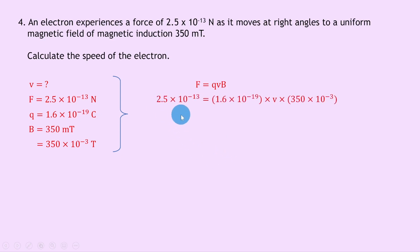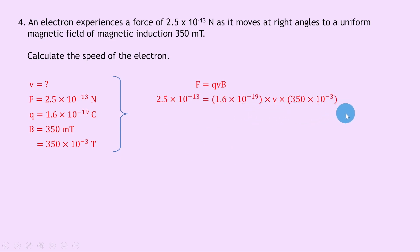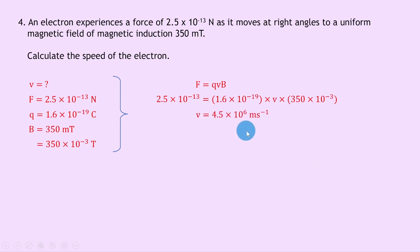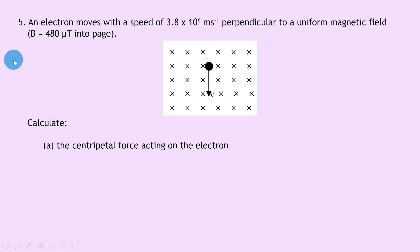Using f equals qvb and substituting: 2.5e-13 equals 1.6e-19 times v times 350e-3. Multiplying the known terms together and dividing to isolate v gives v equals 4.5 times 10 to the 6 meters per second.